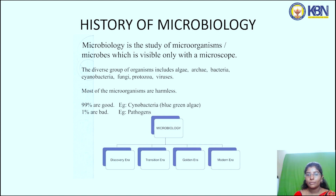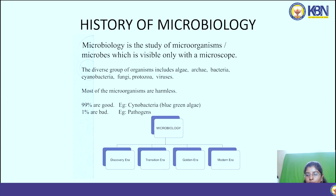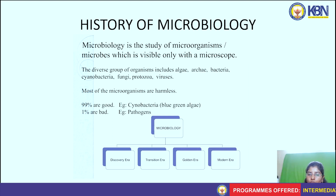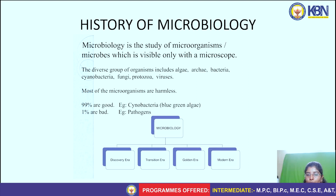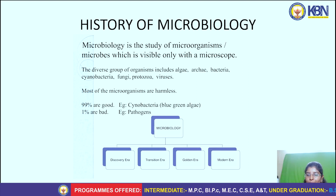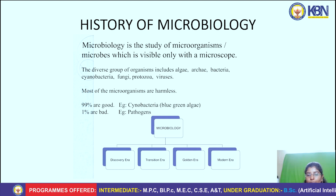These microorganisms are divided into algae, archaea, bacteria, cyanobacteria, fungi, protozoa, and viruses. Most of them are harmless — like 99% are good microorganisms, for example cyanobacteria and blue-green algae — and some 1% are bad microorganisms, for example pathogens.